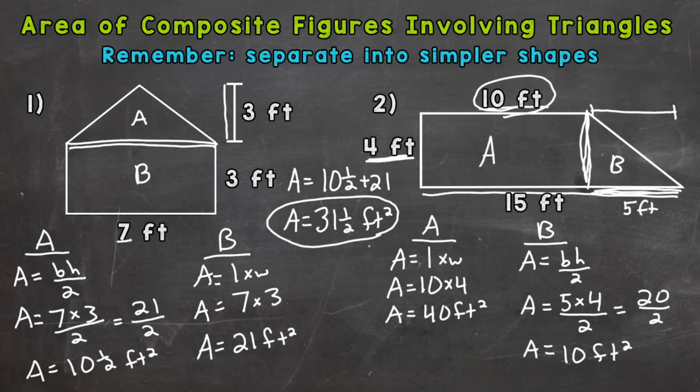Now that we have the area for A and B, add them together for the total area of the composite figure. Area equals 40 square feet plus 10 square feet, and that's going to give us a total area of 50 square feet.